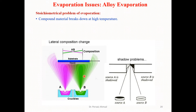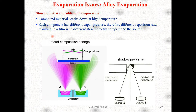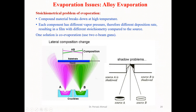Since each component has a different vapor pressure, there will be different deposition rates for materials A and B. This results in a film with a different stoichiometry compared to the source material. Even though we deposit the film, the stoichiometry may not match what we originally required from the source materials.